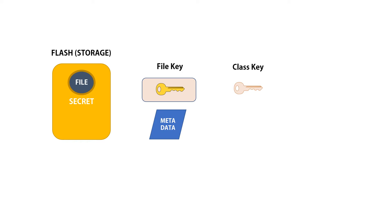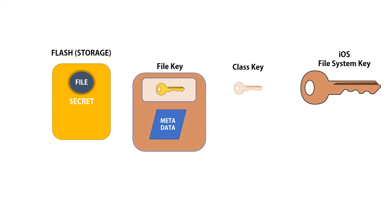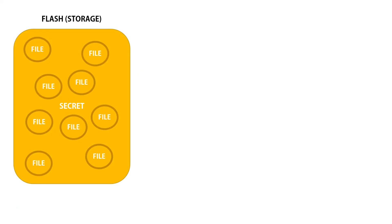Together, the metadata — such as the date, the time, the file name — those are all encrypted with the iOS file system key. There's only one iOS file system key for the entire phone.